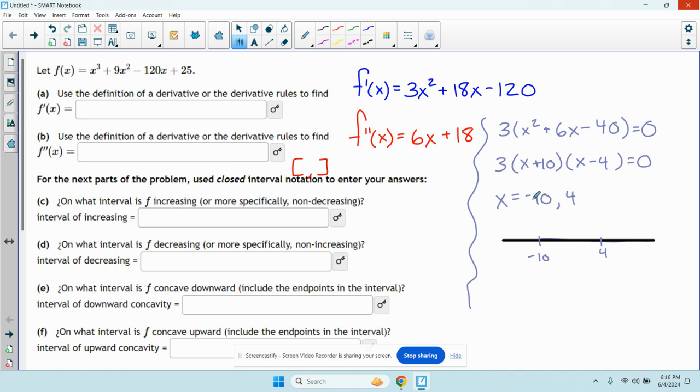So pick a number less than negative 10. Let's say negative 100. I'll plug it into the derivative, see if I get a positive or a negative. Negative 100, this will be a negative, this will be a negative. Negative times a negative is a positive. If I plug in a value between the two, let's say 0, I'll get 3 times 10 times negative 4. That's going to be a negative number. If I plug in a positive number, let's say positive 100, I'll get a positive times a positive. I'll get a positive.